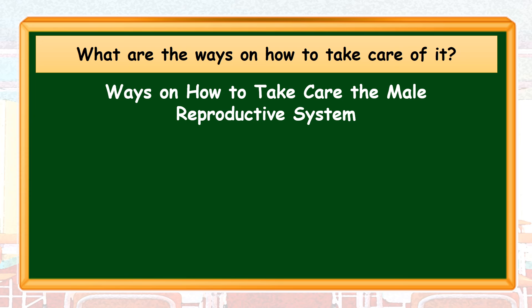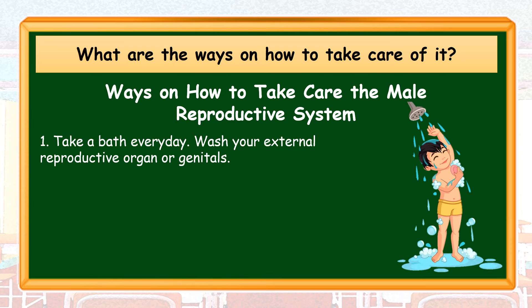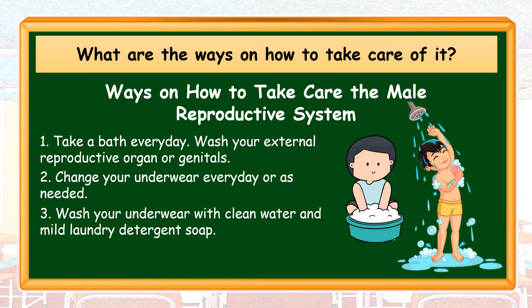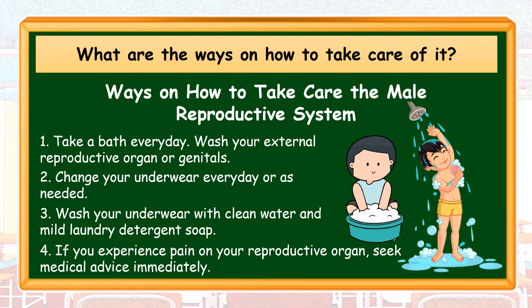Ways on how to take care of the male reproductive system: Number 1, take a bath every day. Number 2, wash your external reproductive organ or genitals. Number 3, change your underwear every day or as needed. Number 4, wash your underwear with clean water and mild laundry detergent soap. And number 5, if you experience pain in your reproductive organ, seek medical advice immediately.